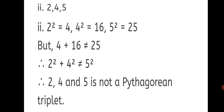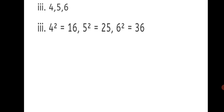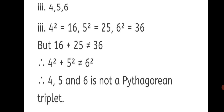Third sum: 4, 5, 6. We write the squares: 4 square is equal to 16, 5 square is equal to 25, and 6 square is equal to 36. Adding the squares of smaller numbers: 16 plus 25 is not equal to 36 — it gives 41. Therefore, 4 square plus 5 square is not equal to 6 square. Therefore, 4, 5, and 6 is not a Pythagorean triplet.